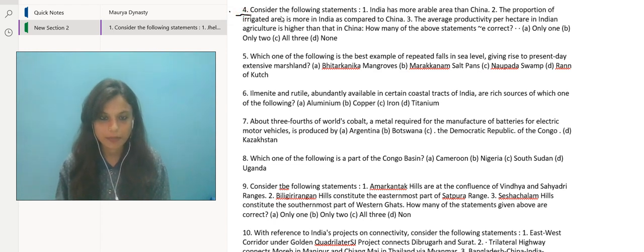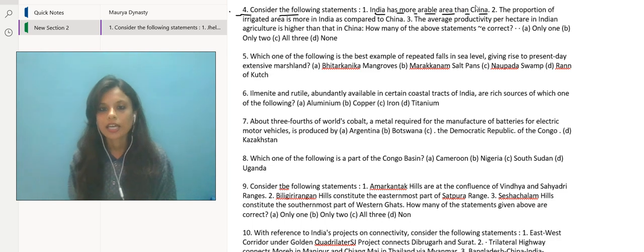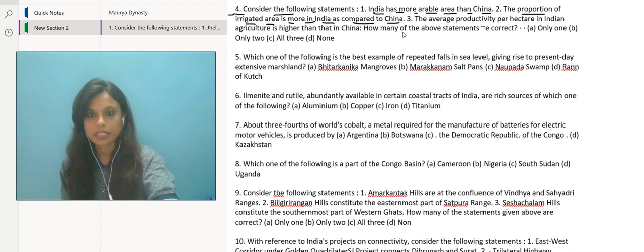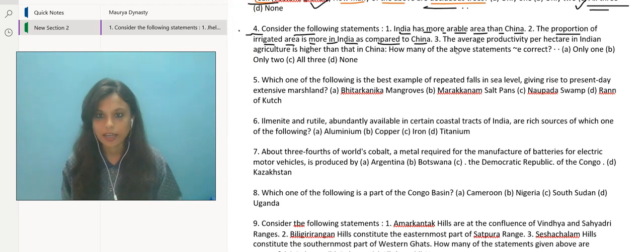This is civil services paper 2023, India. Consider the following statements: 1. India has more arable area than China. 2. The proportion of irrigated area is more in India as compared to China. 3. The average productivity per hectare in Indian agriculture is higher than that in China. These were the three statements.